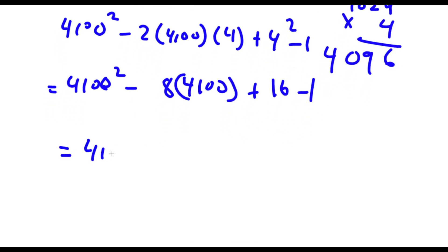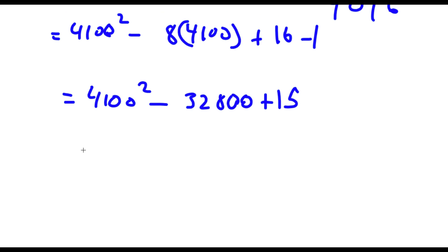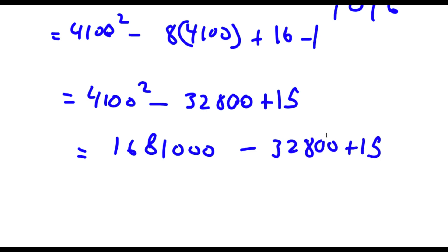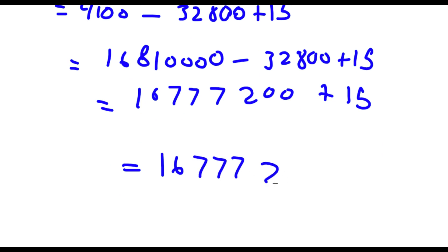So this is equal to 4100 squared minus 8 times 4100 — because 4 times 2 is 8 — plus 4 squared which is 16, minus 1. Now 16 minus 1 is 15, and 8 times 4100 is 32,800. Now 4100 squared is 16,810,000. So now it's equal to 16,810,000 minus 32,800 plus 15, which equals 16,777,200 plus 15, giving me 16,777,215. So this is my answer.